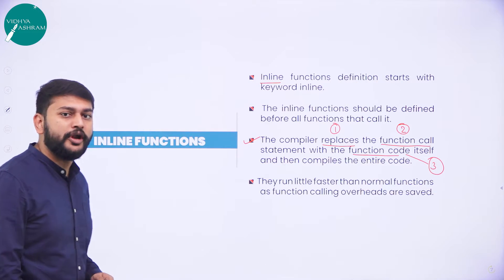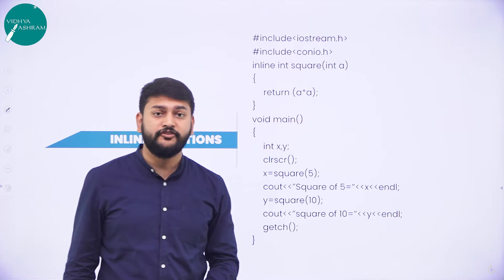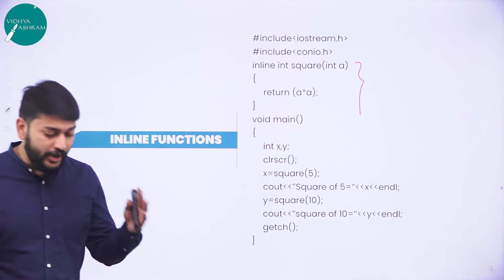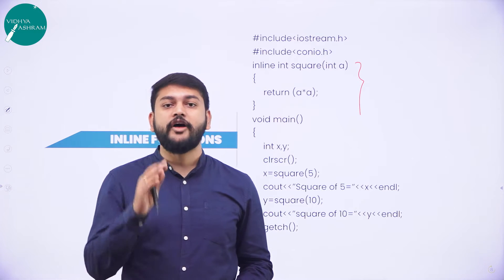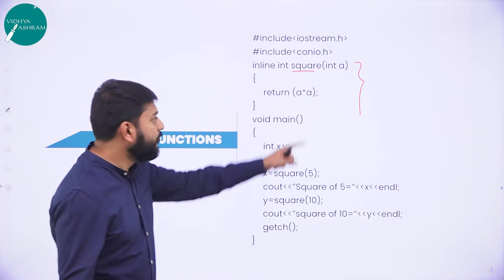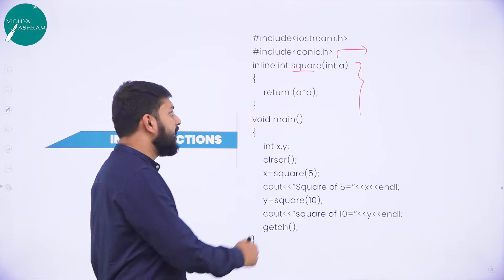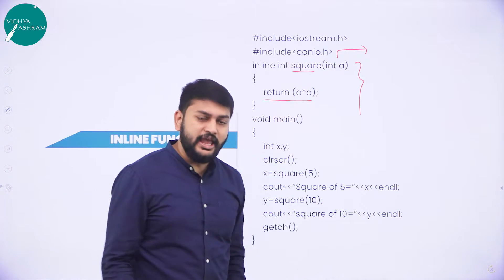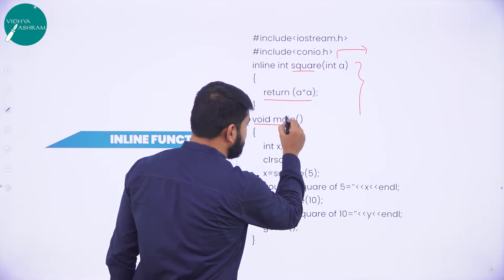Let me trace this program in detail. We have the header files. This is the inline function — whenever you come across the inline keyword at the beginning of a function, you know it is an inline function. The name of the function is 'square'. It has one parameter of type int. Inside the function it calculates a into a, so it computes the square of the given number.